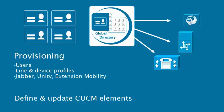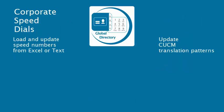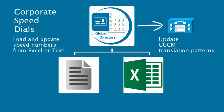Provisioning covers line and device profiles, Jabber, Unity, or extension mobility data. Corporate Speed Dial makes it easy to load and update speed dial numbers, such as from a text or Excel file.